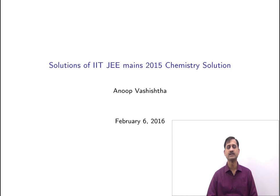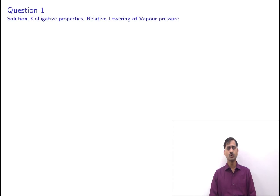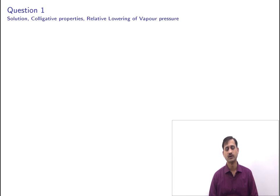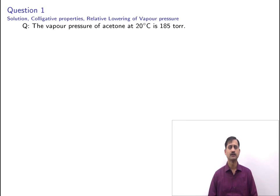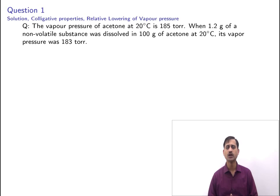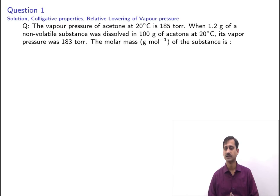This is the solution of IIT JEE Mains 2015 for chemistry. Question number one is from the chapter on solutions, subtopic colligative properties and relative lowering of vapor pressure. The question states: the vapor pressure of acetone at 20°C is 185 torr. When 1.2 grams of a non-volatile substance was dissolved in 100 grams of acetone at 20°C, its vapor pressure was 183 torr. Find the molar mass in grams per mole of the substance. The options are 488, 32, 64, and 128.